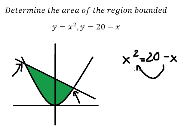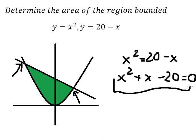So I will move this one to the left. Now we need to find the solutions of this equation. We get x equals 4 and x equals negative 5.